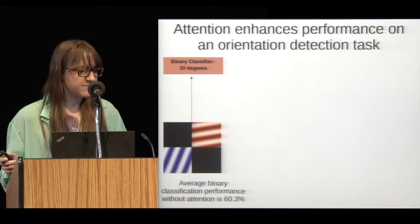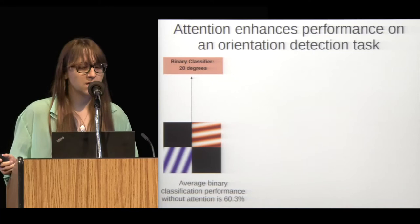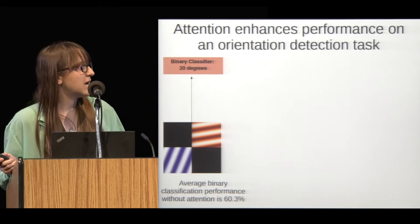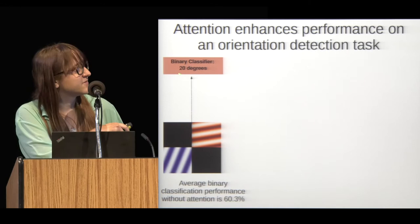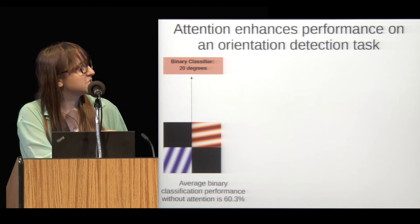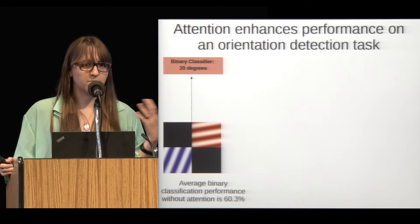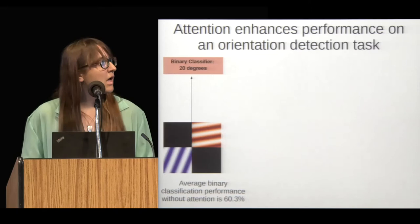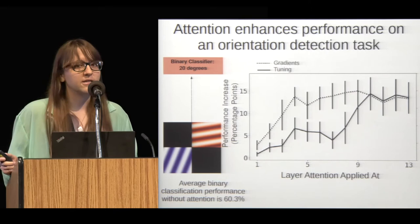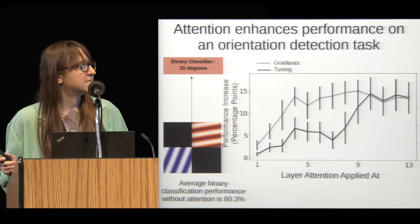Some of these findings might seem specific to category-based attention, so we use a simpler model meant to detect oriented gratings. Instead of binary classifiers for different categories, there are binary classifiers for different orientations, and the network is shown images with two overlaid orientations. Without attention, performance is around 60%. Attention is applied by creating orientation tuning curves and applying attention according to those values. The result is a very similar pattern: it's still the later layers in the network where attention is most effective at enhancing performance, and the gradient values again perform better at earlier layers.